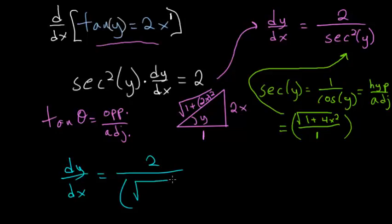So we have the square root of 1 plus 4x squared, and we need the secant squared, so we'll square this expression. So we can rewrite this as 2 divided by 1 plus 4x squared.